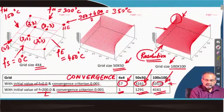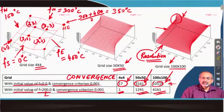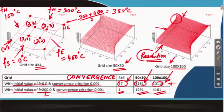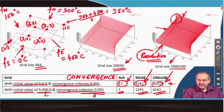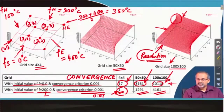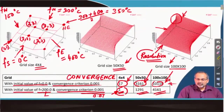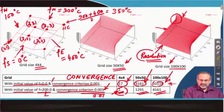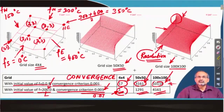The initial guess value has an impact on how many iterations are needed before reaching steady state. Additionally, how stiff is your convergence criterion matters: if you relax the criterion from 0.001 to 0.01, all these computations would take much fewer iterations. So the three things which heavily influence the solution are: the convergence criterion, the initial guess, and the grid size.